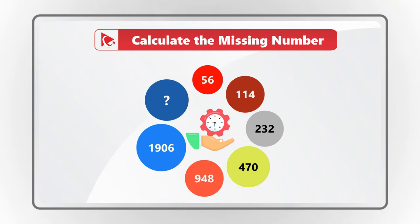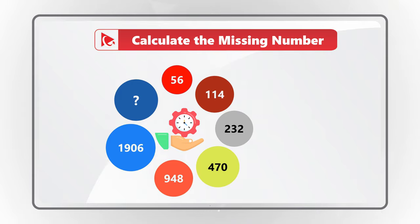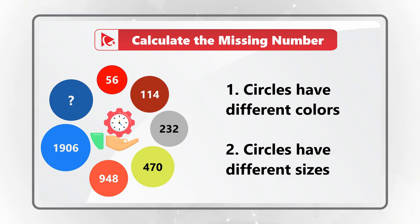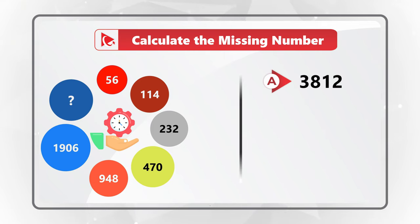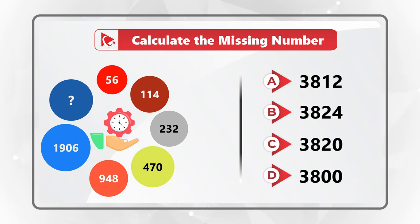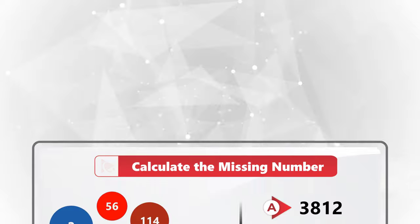What's interesting about this problem is that all circles have different colors, and some circles have the same size while others have different sizes — but regardless, you need to select one of four choices: choice A is 3812, choice B is 3824, choice C is 3820, and choice D is 3800. This is a tricky problem, but I'm moving forward to reveal the final solution.